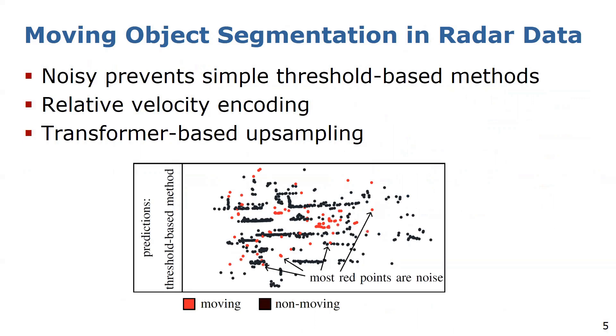To overcome these limitations, we propose a transformer-based architecture with a new relative velocity encoding and transformer-based upsampling to effectively extract valuable features from the sparse and noisy radar point clouds.